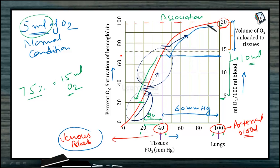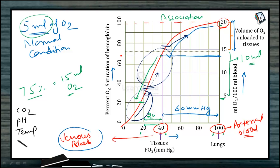This Bohr curve is affected by a number of factors: the level of CO2, pH, temperature, and 2,3-diphosphoglycerate (DPG).